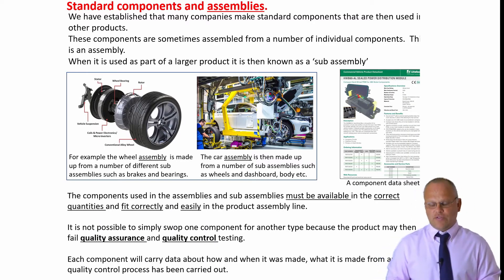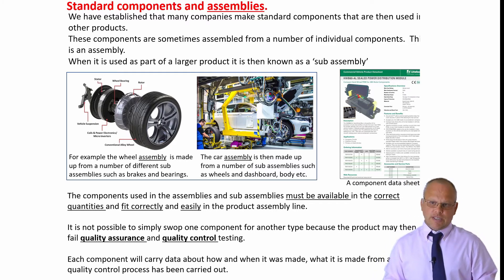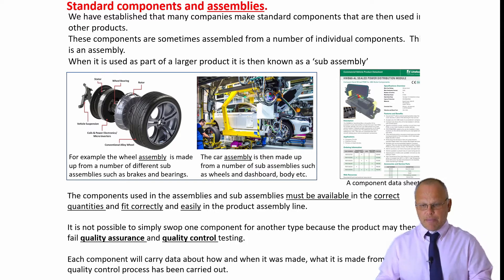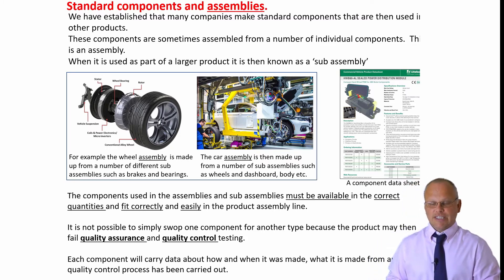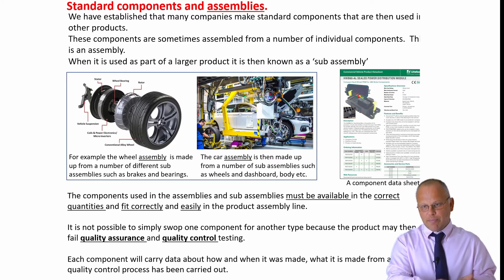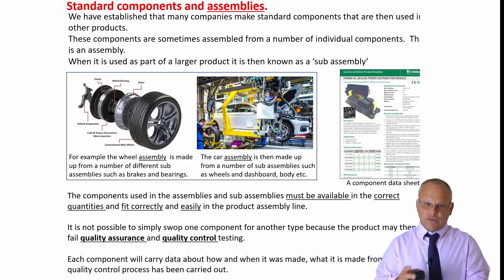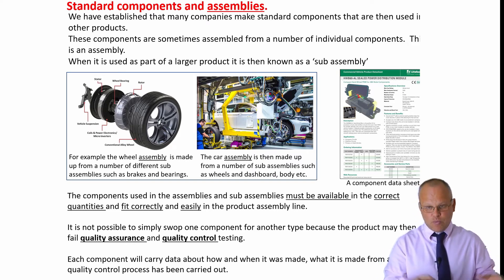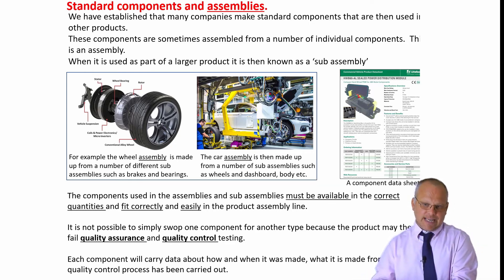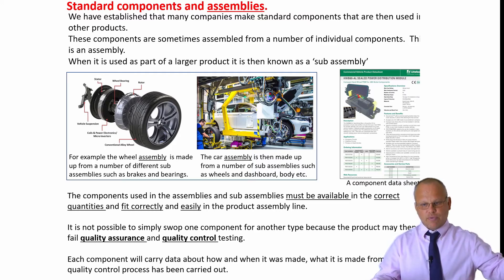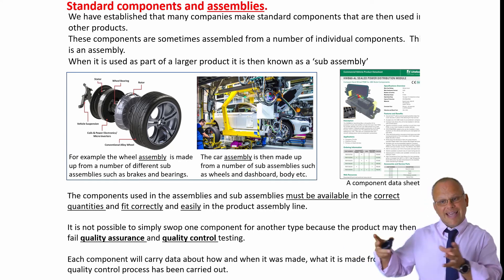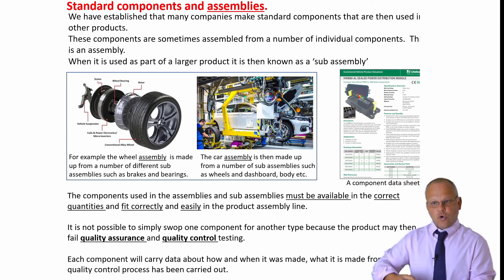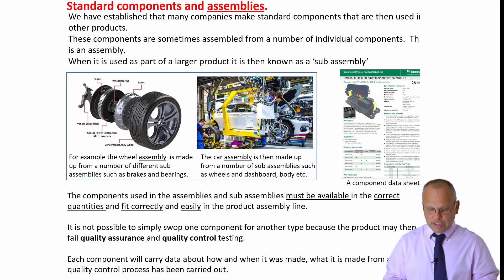When answering an exam question about why quality control or standard components are important, it's about having the right product in the right place at the right time to the right standard. In just-in-time (JIT) manufacturing, parts are only in the warehouse or on the assembly line when needed. If the nuts and bolts for a steering assembly fail quality checks at the start of the process, it could hold up the entire assembly line.